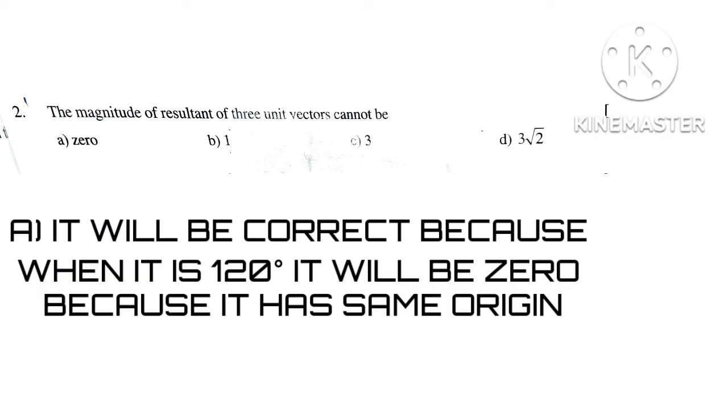The resultant of three unit vectors cannot be... Option A is zero. This will be correct because when the angle is 120 degrees, it will be zero because they have the same origin. When they ask what the magnitude cannot be, it means which value is not possible as shown in the options.